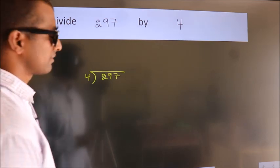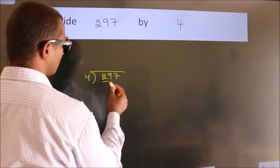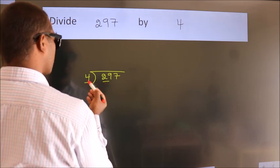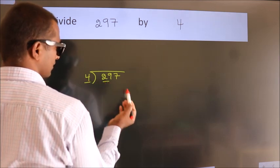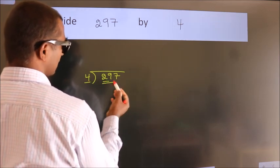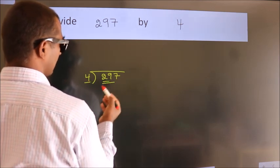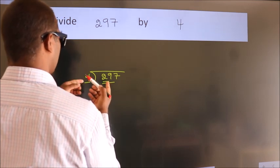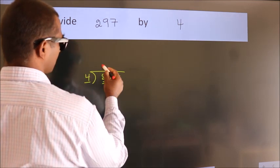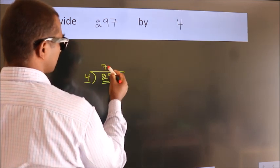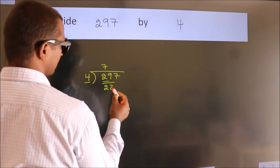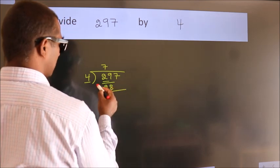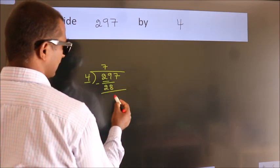Here we have 2, and here 4. 2 is smaller than 4, so we should take 2 numbers: 29. A number close to 29 in the 4 times table is 4 sevens, 28. Now we subtract and we get 1.